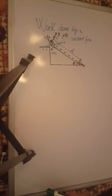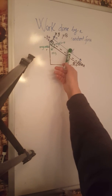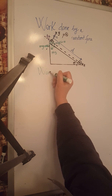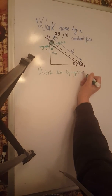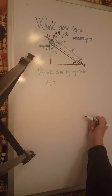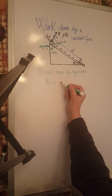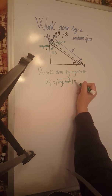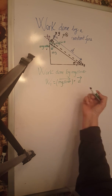Let's calculate the work done by the two constant forces parallel to the plane: first by mg sine theta, then by Fk. To calculate the work done by mg sine theta — call it W1 — according to the definition of work done by a constant force, that's the dot product of the force mg sine theta with the displacement vector d.